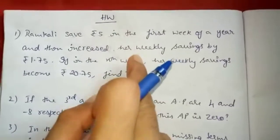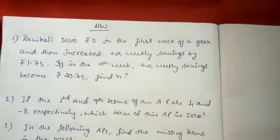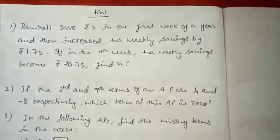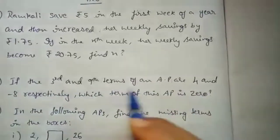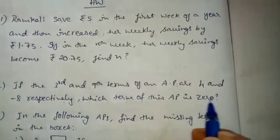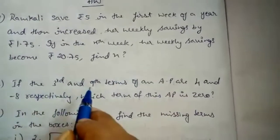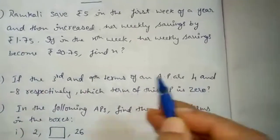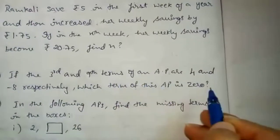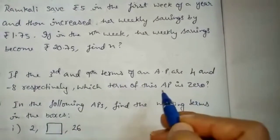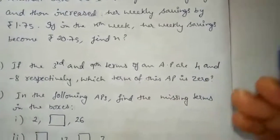This is similar to the Subba Rao question I solved. Next homework: If the 3rd and 9th terms of an AP are 4 and minus 8 respectively, which term of the AP is 0? So A3 equals 4 and A9 equals minus 8. You have to find n where An equals 0 — which term of this AP is 0.